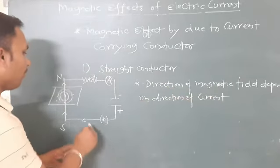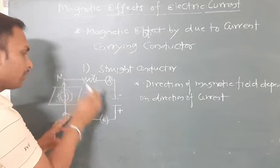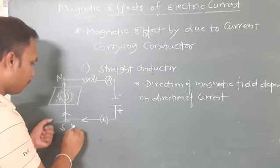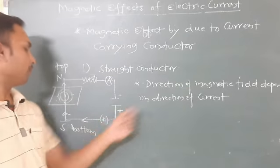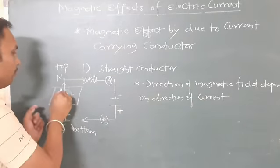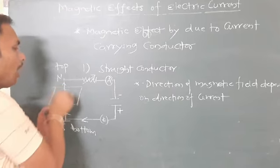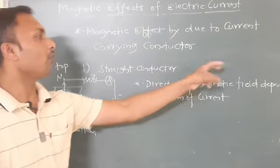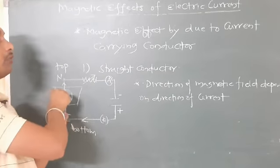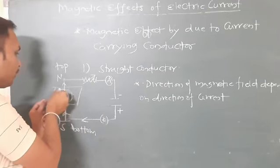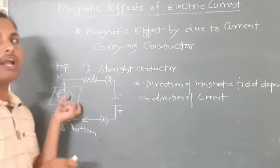The direction of magnetic field: if the current is flowing from south to north — that is, from bottom to top — then the circular magnetic field lines will be formed in the anticlockwise direction.